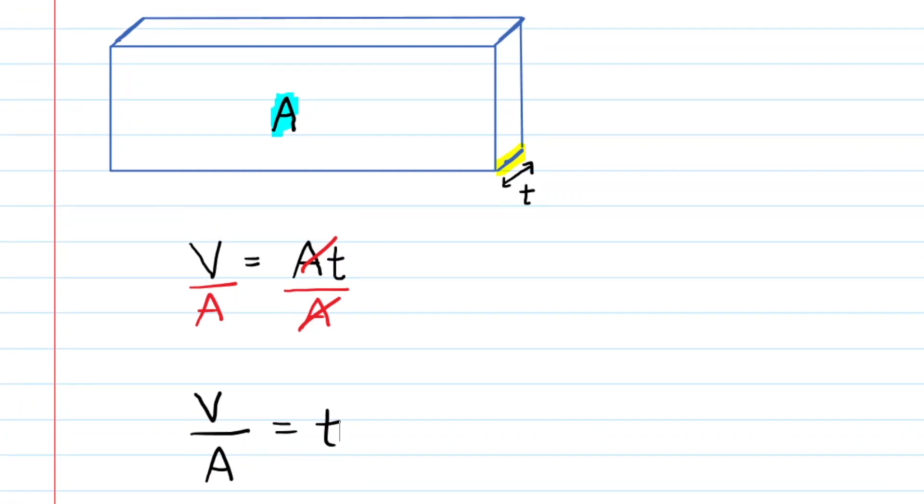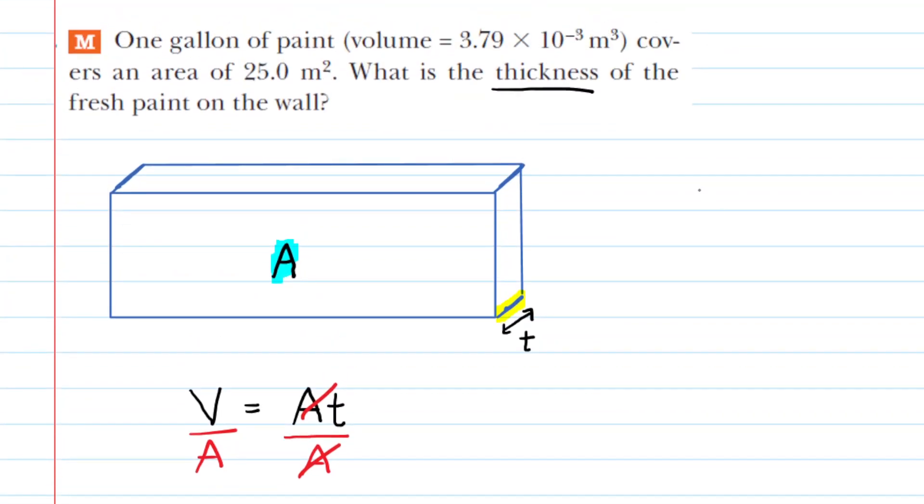Really all we need to do is divide those two quantities, and they're both given in terms of meters, so volume in meters cubed, area in meters squared. Let's go ahead and simply divide the volume by the area.